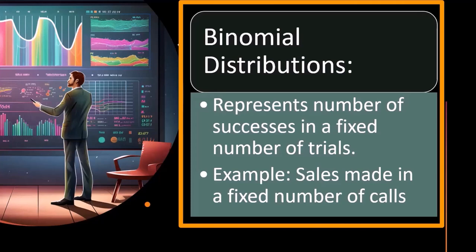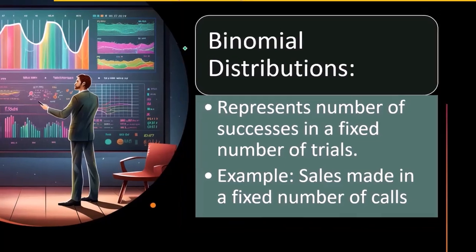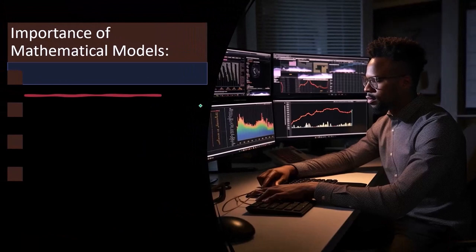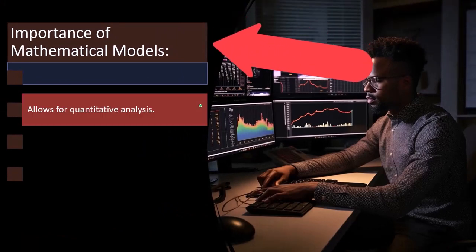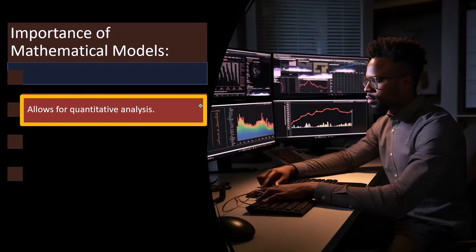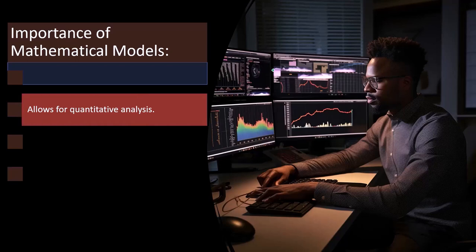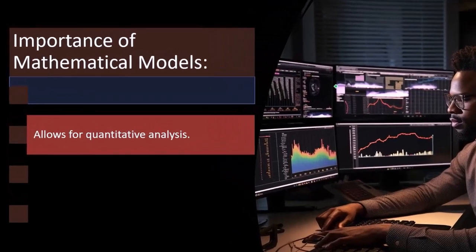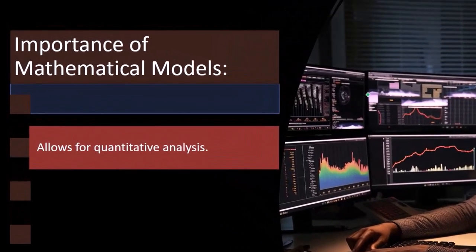We'll get more into the specifics of when something in actual practice will typically follow a binomial distribution. If it does, then we can use this concept to make predictions about the future. Importance of mathematical models: allows for quantitative analysis. Obviously if we can get a mathematical model, remember when we're taking a data set, the data set could be any jagged line.